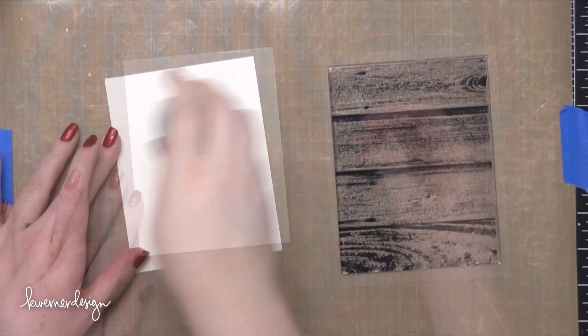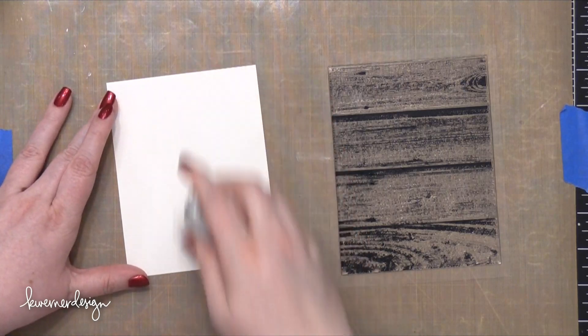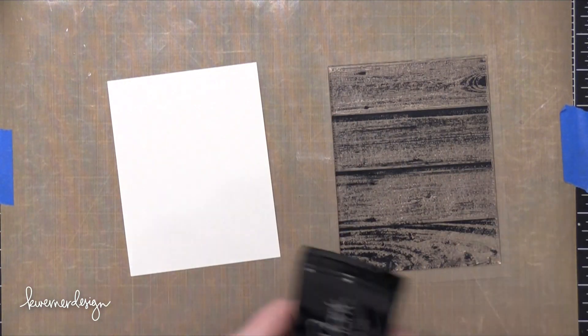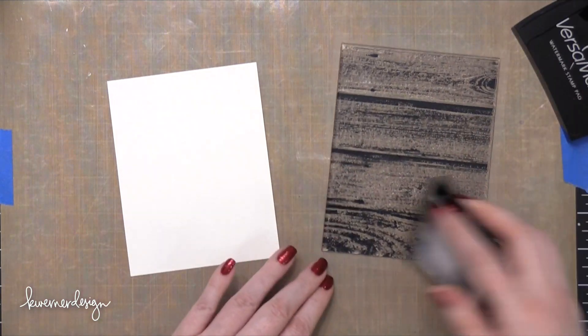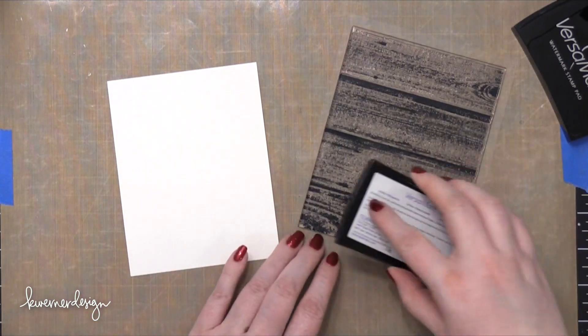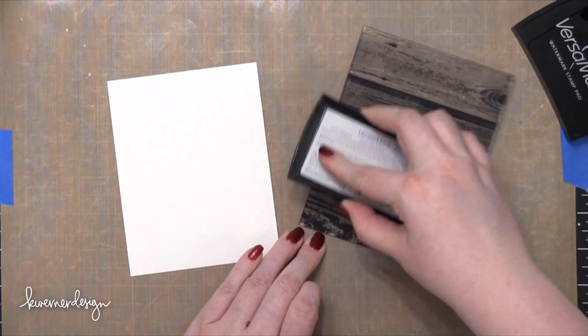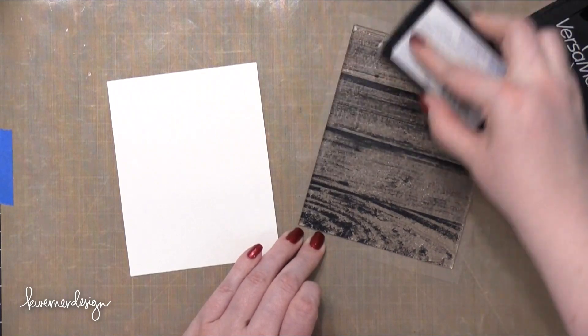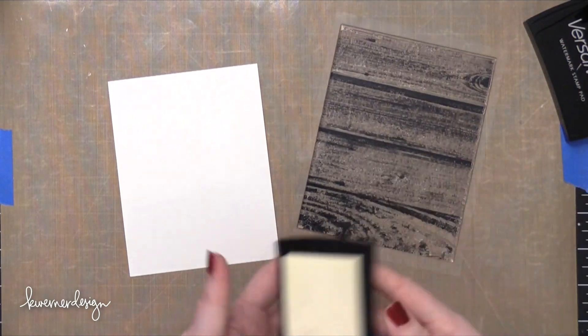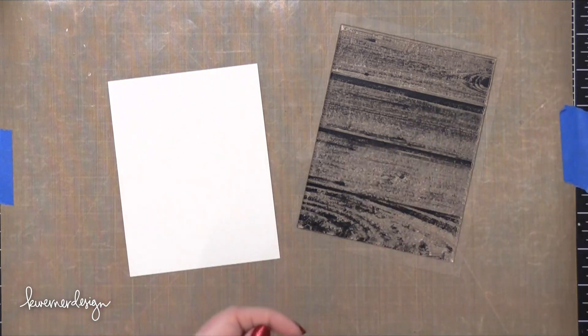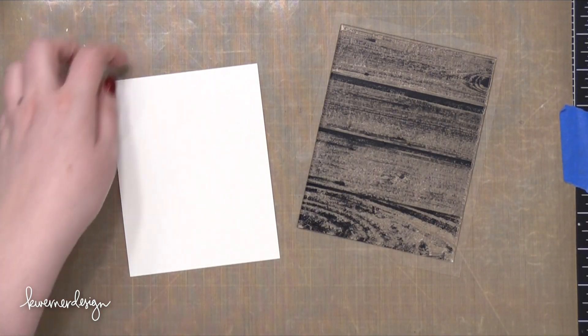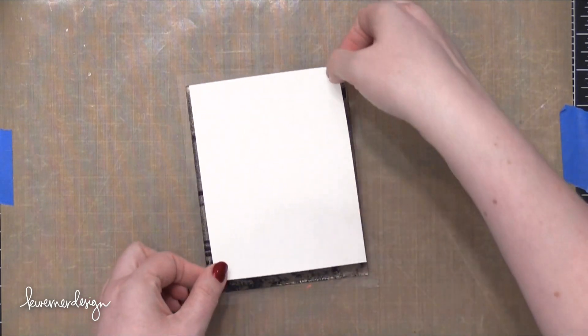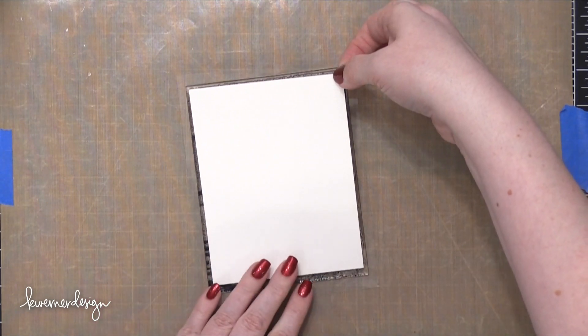Starting out with that Barnwood Background stamp and I'm prepping my card stock first before I do the stamping. This card stock is Neenah Solar White and this is the 80 pound version. I just ran that EK Success Powder Tool over the entire surface of the card stock in order to prepare it for heat embossing.